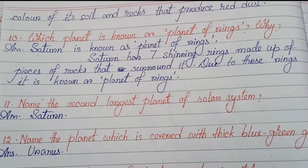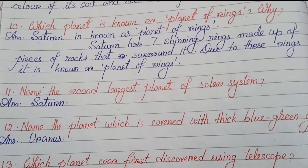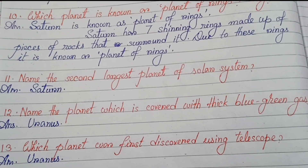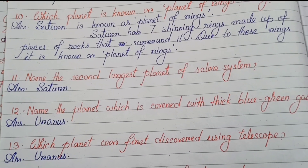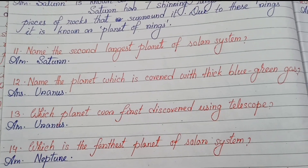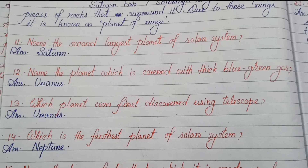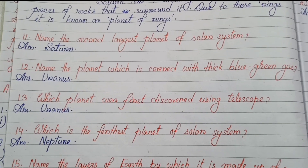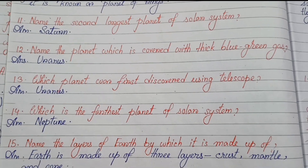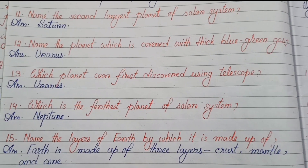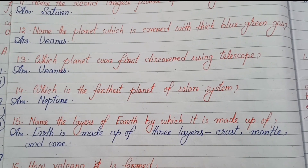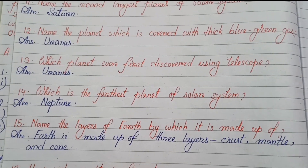Number eleven: Name the second largest planet of the solar system — Saturn. Number twelve: Name the planet which is covered with thick blue-green gas — Uranus. Number thirteen: Which planet was first discovered using a telescope? Uranus.